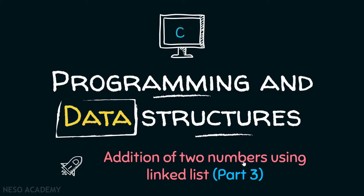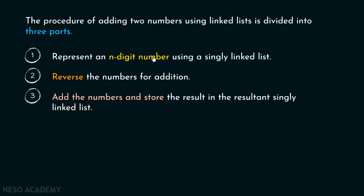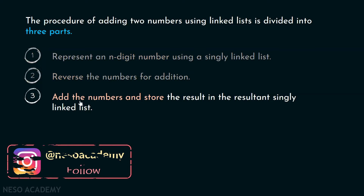This is part three of addition of two numbers using linked lists. The procedure of adding two numbers using linked lists is divided into three parts. We have already learned in the previous presentation how to represent an n-digit number using a singly linked list and how to reverse the singly linked lists. In this presentation, we will learn how to add the numbers and store the result in the resultant singly linked list.